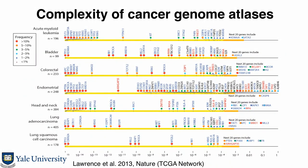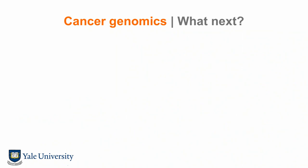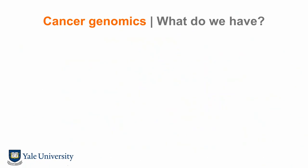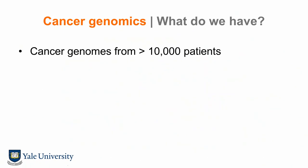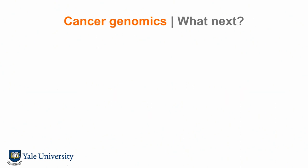As all of you in the cancer field know, cancer is an extremely complex disease with hundreds or even thousands of mutations in each cancer patient that you can sequence. The map has been sequenced many, many times. We now have the cancer genome of more than 10,000 patients and accumulating, with more than 35 cancer types sequenced. These include mutations, copy number, transcriptome, proteome, epigenome, and even single cells in cell atlas work.